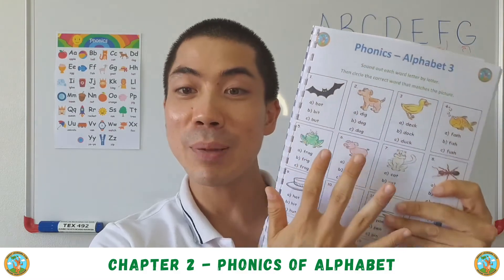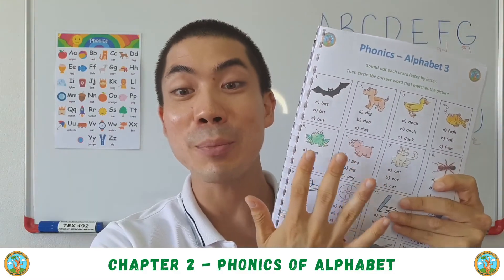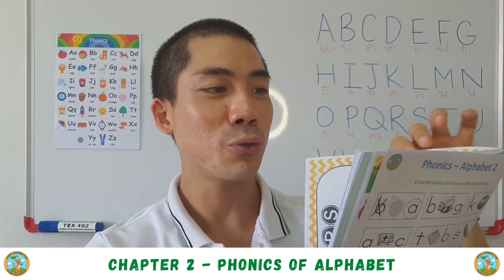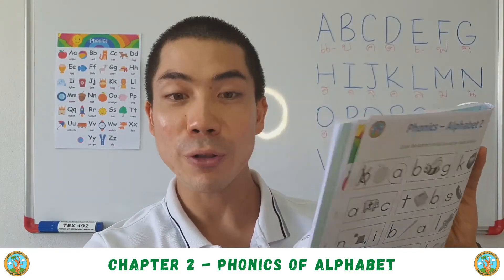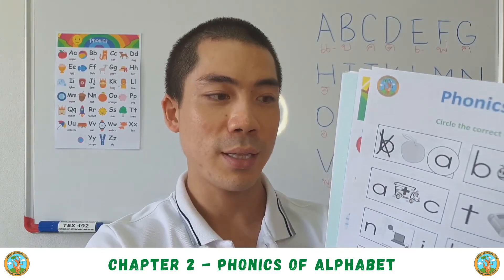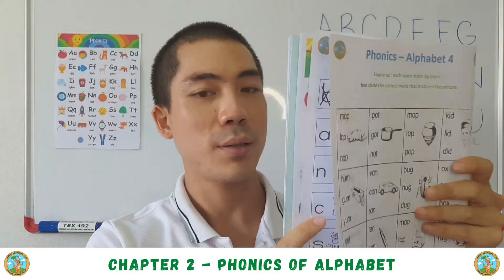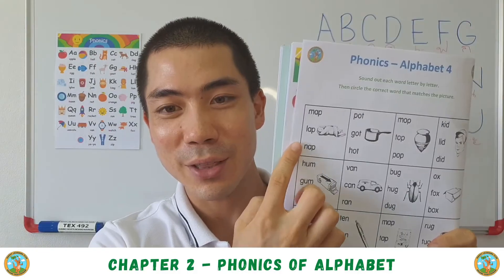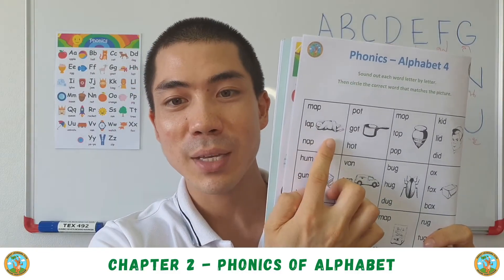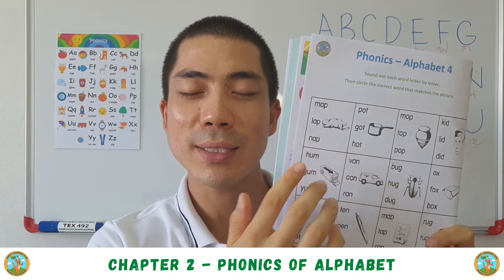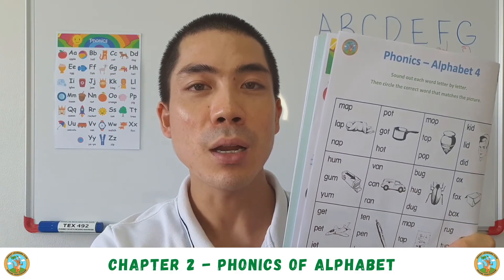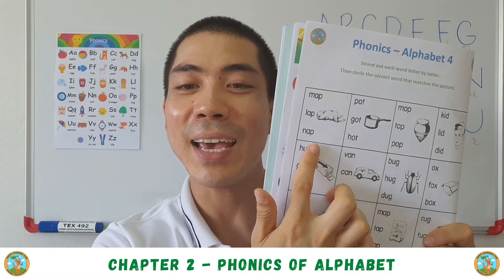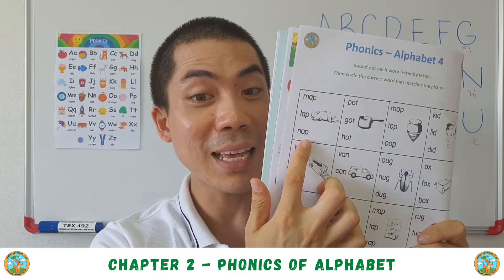So this is how we complete the third page. Try your best to fill out the answers. Then we move on to the fourth page. The vowel sound is the same. This is a nap — sounding out the word: nap, n-a-p, nap. N-n-n-n, a-a-a, p-p-p. So nap is the last one.